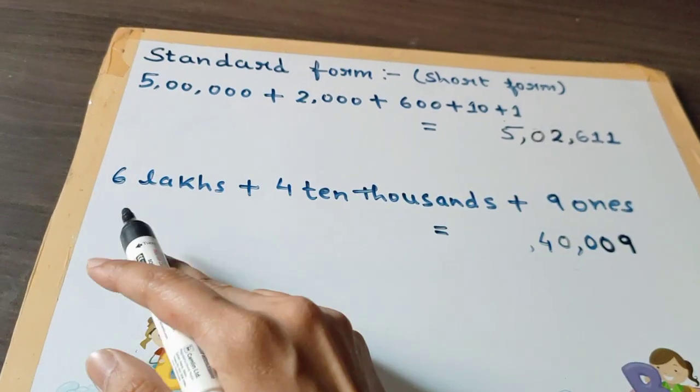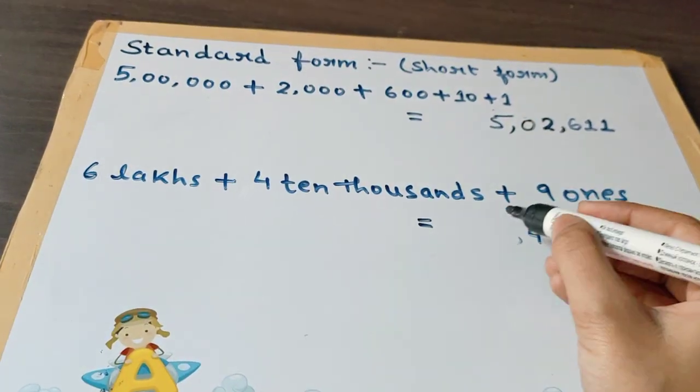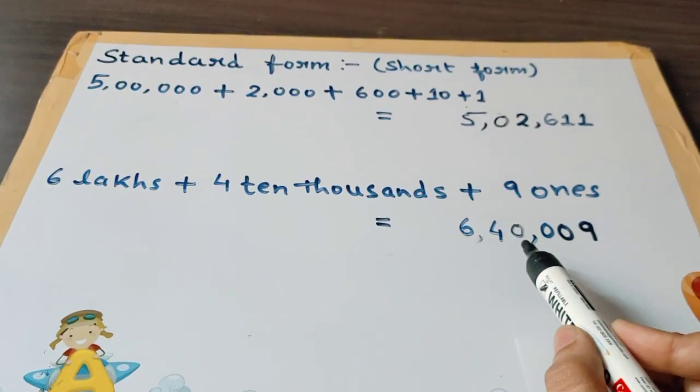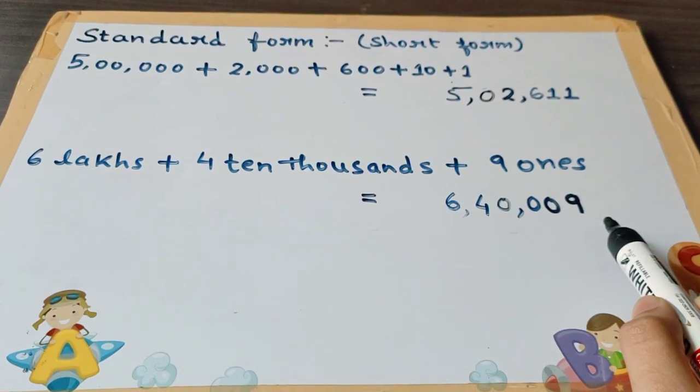Finally, 6 is at the lakhs place, so we will write 6. The number is 6 lakh 40,009.